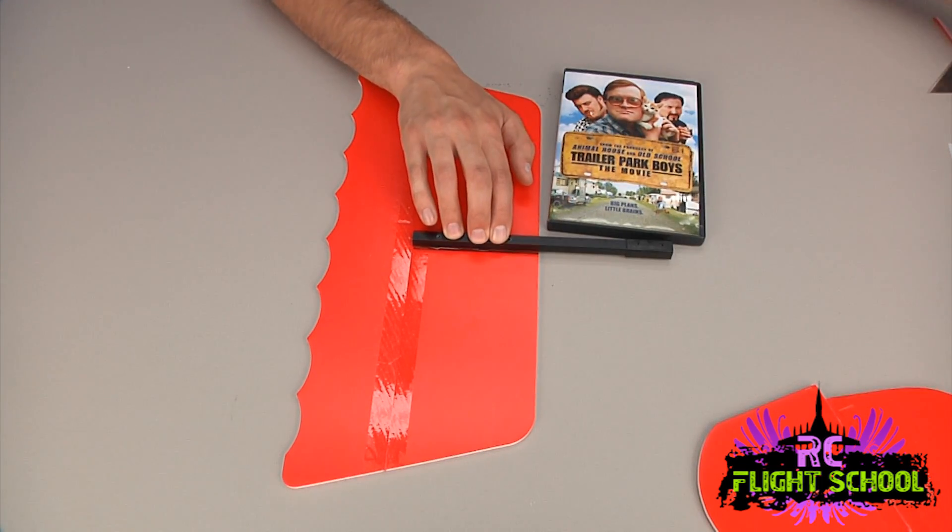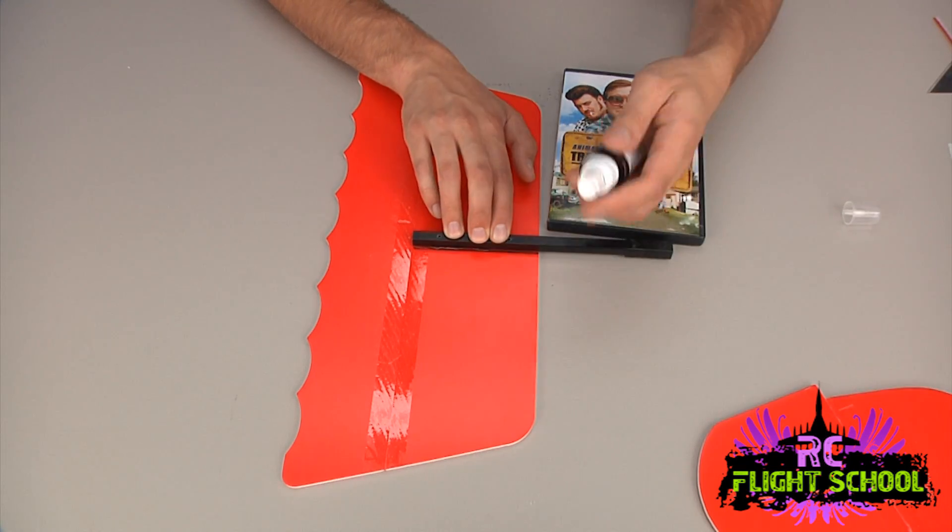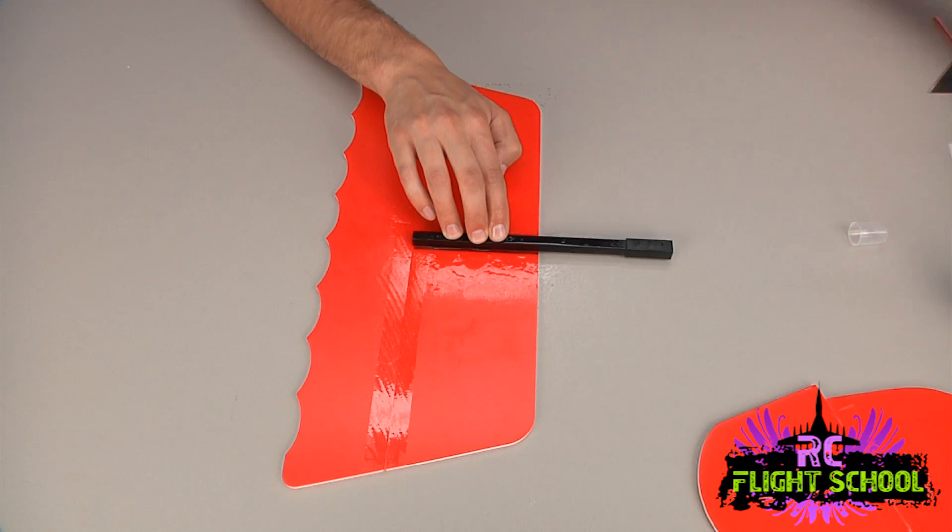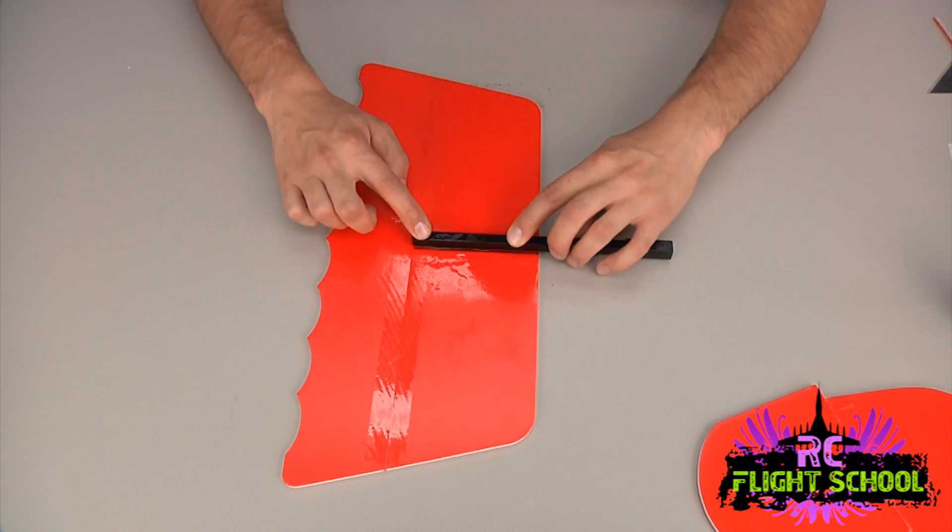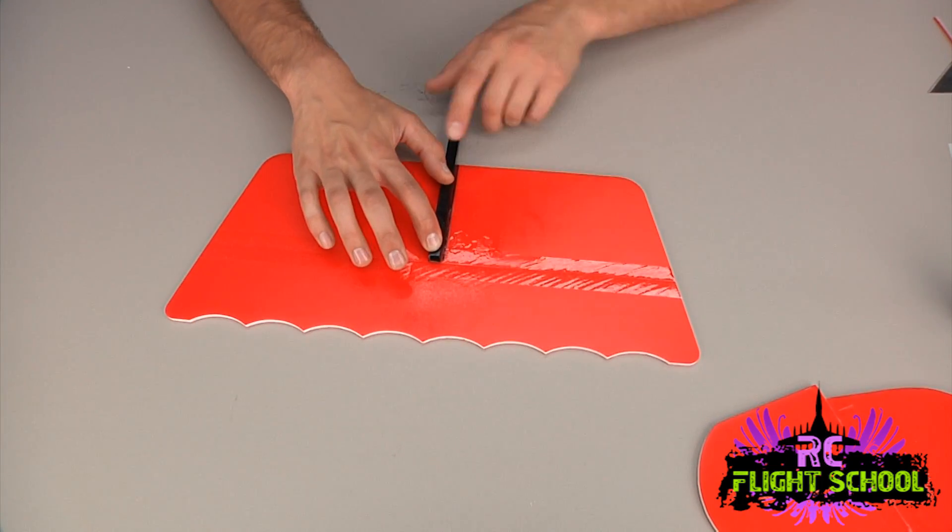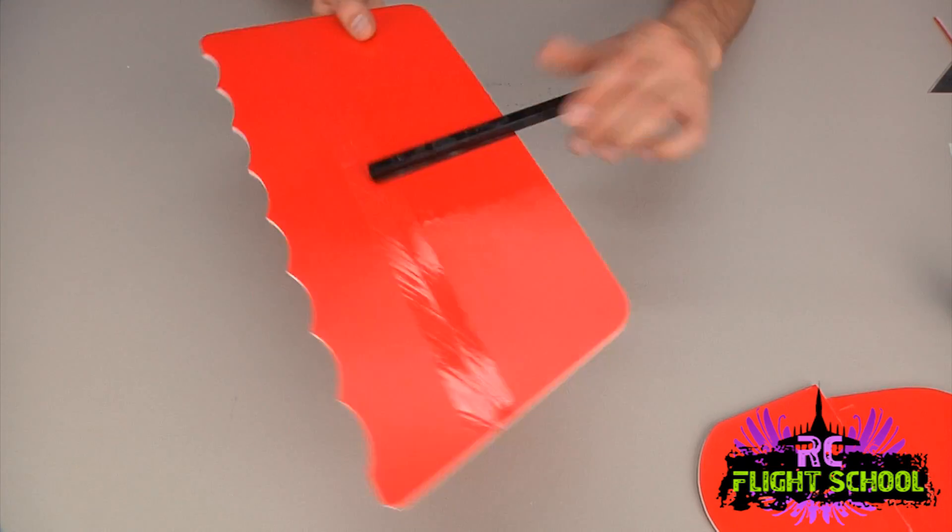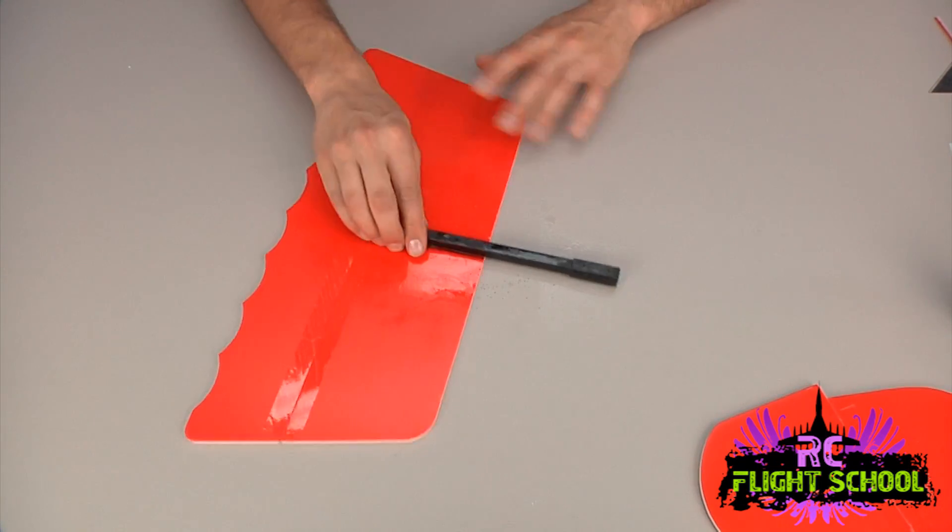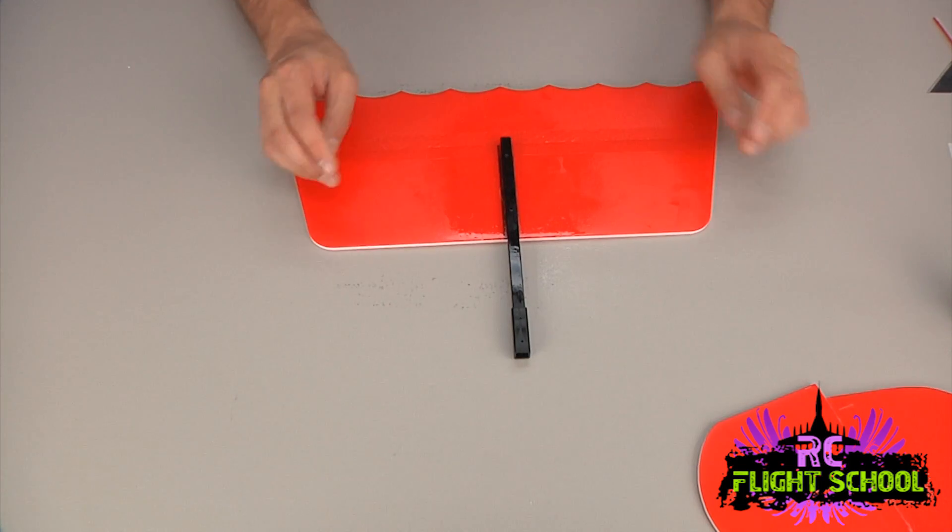Once you're happy with the angle you got this at and the positioning, if you bought the kicker, a quick spray and that will set up real quick within a few seconds. Blowing on it will help accelerate that, help work it into the glue joint. And there you have it. Now we have a horizontal stabilizer glued to our fuselage or stick, whatever you want to call it.